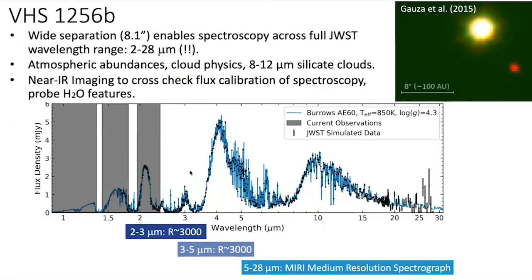We're also going to be doing a fair amount of spectroscopy. The target is VHS 1256B, something like a planetary mass companion. The advantage of this system is that it has a very wide separation from its host star — about 8 arcseconds — which prevents a lot of contamination from host starlight, allowing us to get a very clean spectrum of a planetary mass companion. We're going to use both NIRSpec and MIRI spectrographs to get spectroscopy all the way out to 28 microns. This is particularly exciting because we're hopefully going to achieve the first detection of clouds on a planetary mass companion — spectroscopy like this has never been done before.